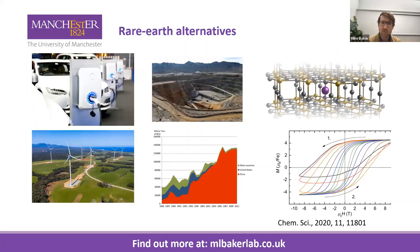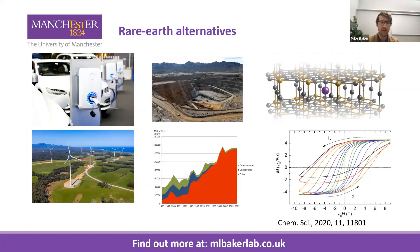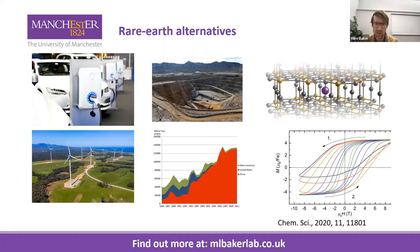Another area we're interested in is rare earth alternatives. On the top right is an iron-doped lithium nitride — a transition metal compound that exhibits large magnetic coercivity competitive with that of rare earth magnets. Rare earths in permanent magnets are vital for electricity generation and electric motors and are in great demand. However, there is a scarcity of rare earths and their mining can be very detrimental to the environment. So an alternative is to find transition metal examples, such as iron, that also exhibit the desirable magnetic properties that rare earths hold.